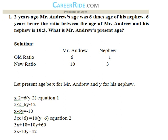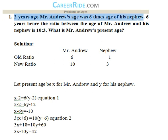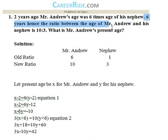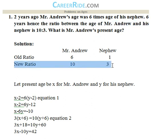Reading the question, we get two inferences. First, the old ratio is 6 is to 1 — two years ago, Mr. Andrew's age was six times the age of his nephew. Second inference: six years hence, the ratio between the age of Mr. Andrew and his nephew is 10 is to 3, which is the new ratio. So two equations would be formed.